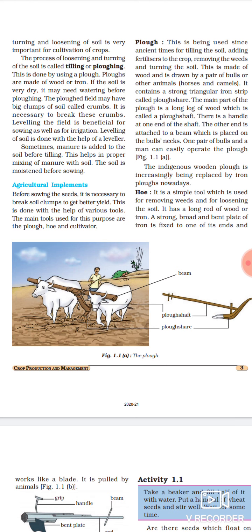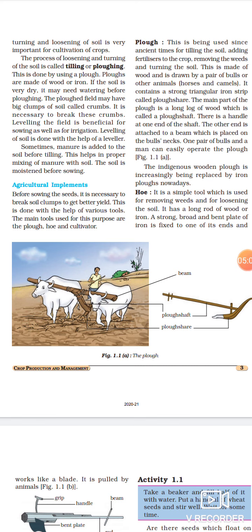It contains a strong triangular iron strip called plow share. Aap diagram mein dekh sakte ho, ismein ek bahut lambi si triangular rod jaisa structure hai, jisko humne plow share bola hai. The main part of the plow is a long log of wood which is called a plow shaft. Uske alawa ek lamba sa handle, aap ko dikha raha hai diagram mein, usko hum plow shaft bolte hai. Plow shaft ek hi side par hoti hai. The other side is attached to a beam which is placed on the bull's neck. Doosari side aap dekho, ek beam sa attached hai, jo ki bull ki neck par hum ne lagai hai. Same tractors mein agar hum ne lagani hai ye plow, toh hum tractor ke aage wale part par lagayenge.